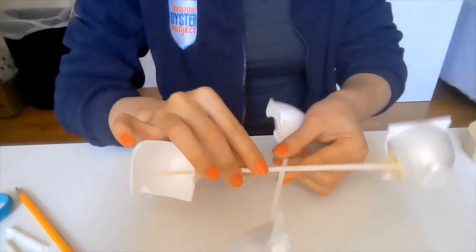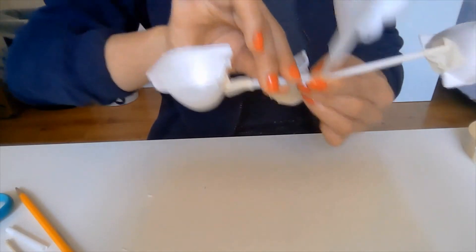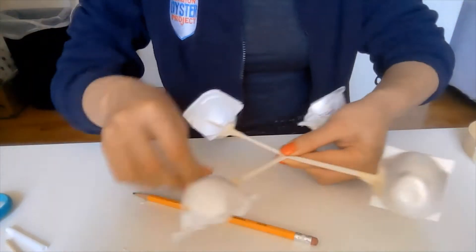Next, we are going to cross both straws to form a 90 degree angle. Make sure that all of the cups are facing the same direction, either clockwise or counterclockwise. Tape the straws together at the intersection.